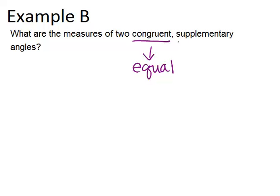We also know that supplementary means adds to 180 degrees. So if we have two angles that are the same and add to 180 degrees, that means that each angle has to be 90 degrees, because those are two angles that are the same that add up to 180.